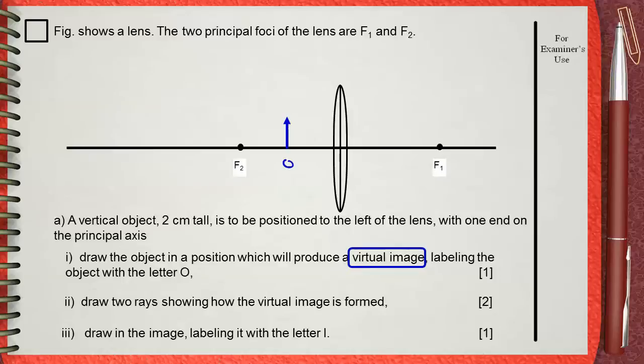He said that your object will be to the left of the lens and it's 2 centimeters tall. So, using your ruler, draw an arrow which is 2 centimeters tall, anywhere between the focus F2 and the lens, so that the object will be to the left of the lens.